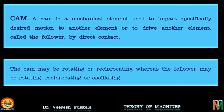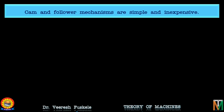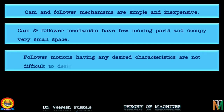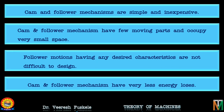Cam and follower mechanisms are simple and inexpensive, have few moving parts, and occupy very small space. Follower motions having any desired characteristics are not difficult to design. When it comes to transferring rotary motion into linear actuation, there is likely no better mechanism than a cam and follower. Translating rotational motion into linear motion is not always the easiest thing to do efficiently, but cam and follower do this task with ease. There also exists a subset of cam design that provides very fluid and precise motion. Cams are not limited by simple shapes — they can be designed to have an organic, flowing interface with the follower mechanism, resulting in more specified radial cams. This range of freedom gives engineers the ability to create unique mechanisms with only a simple rotational input.